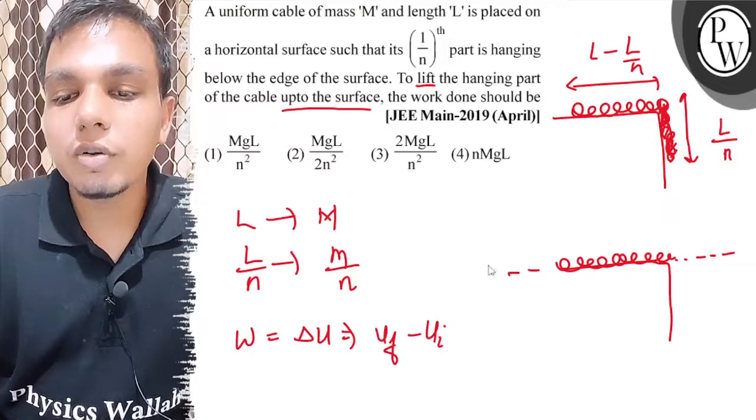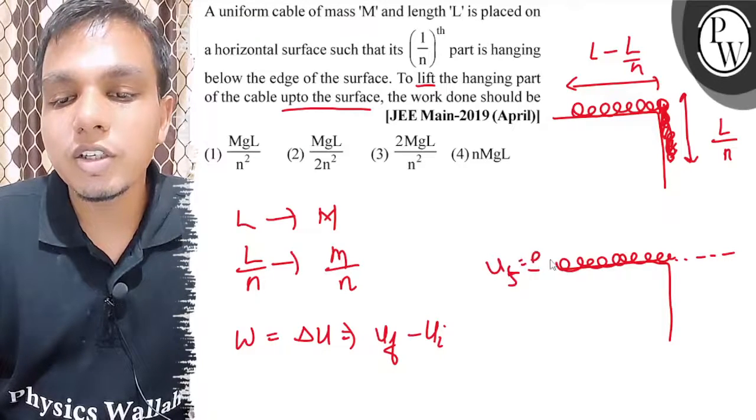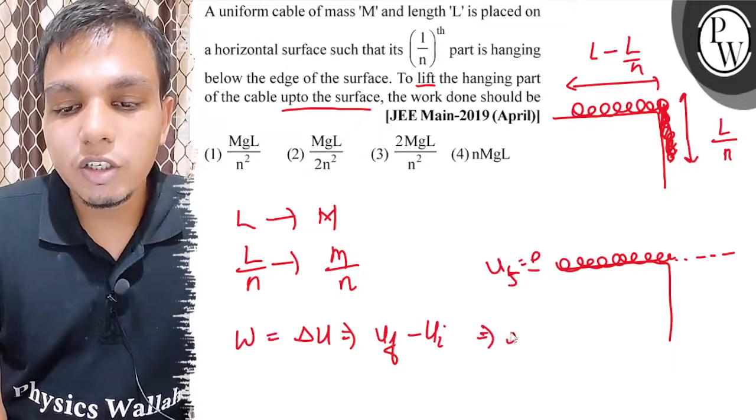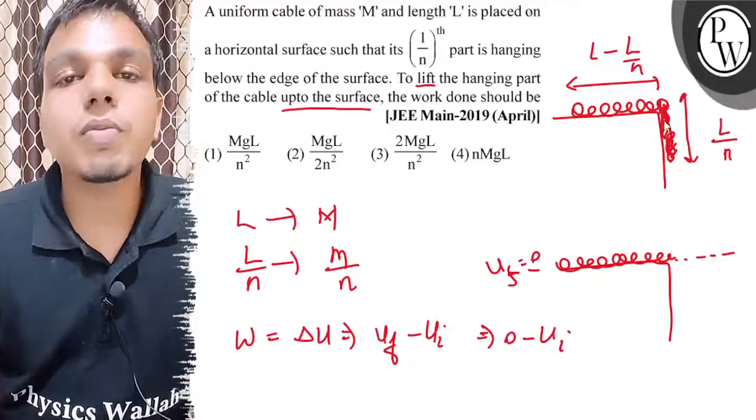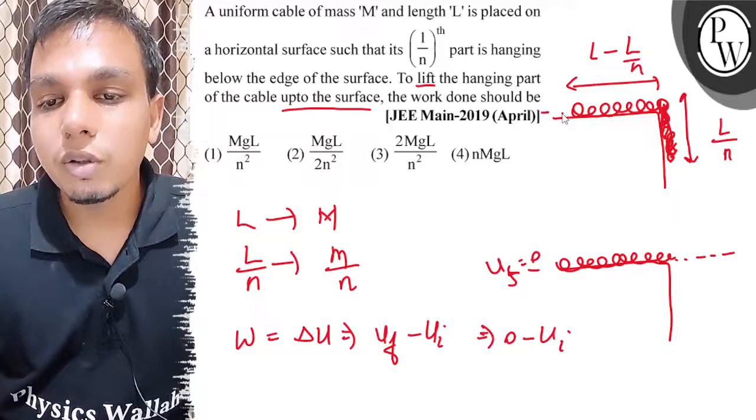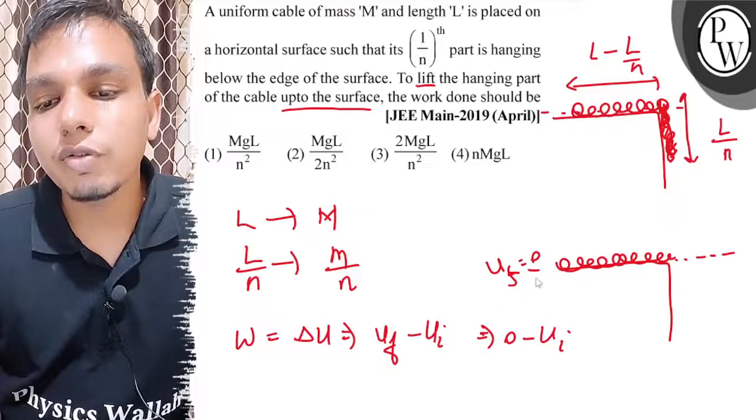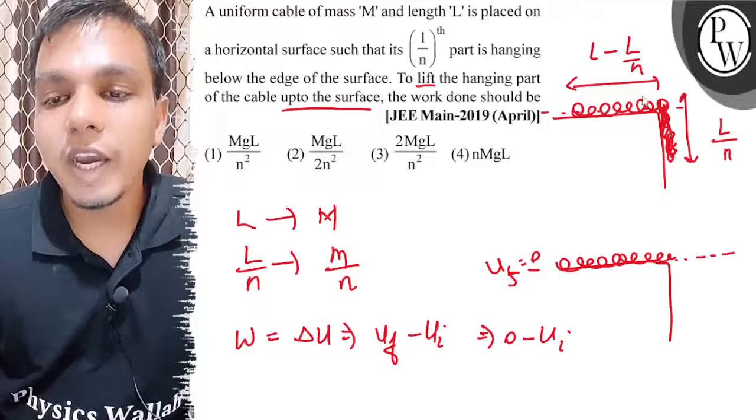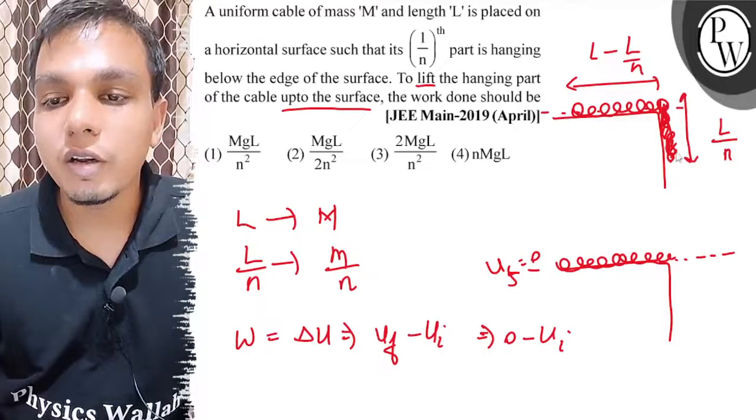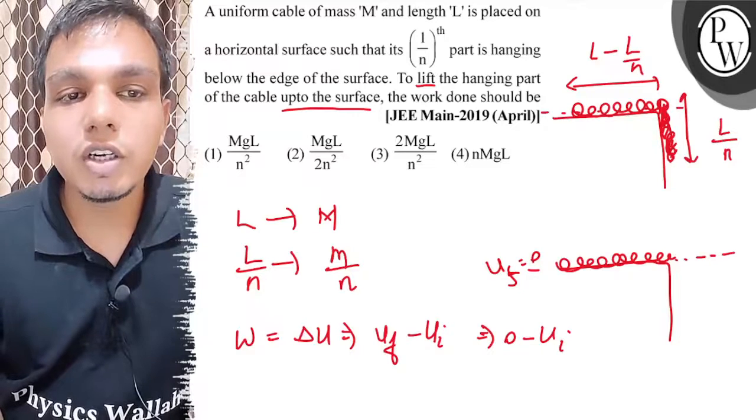To reference, so final potential energy minus initial potential. Now, initial potential energy कैसे लिखेंगे बच्चों? So देखो, जो part table पर है उसकी तो potential energy होगी नहीं क्योंकि उसको reference माना है हमने। So इतने hanging part की potential energy लिख लेते हैं।